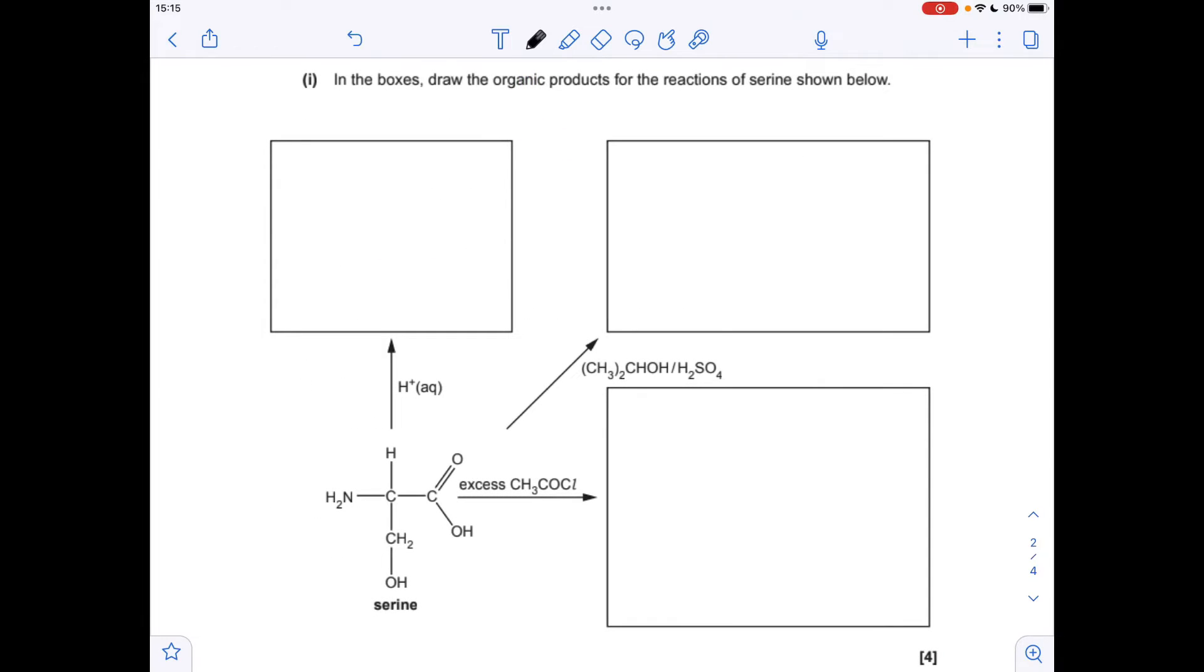Moving on to the next question. So some reactions of this alpha amino acid serine. So we'll go up here first. If you react this with an acid, so with H+ ions, the acid can be accepted by the lone pair on that nitrogen, which means the NH2 group becomes an NH3 with a plus charge.